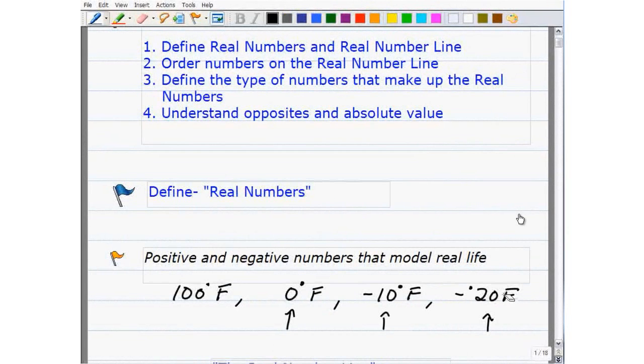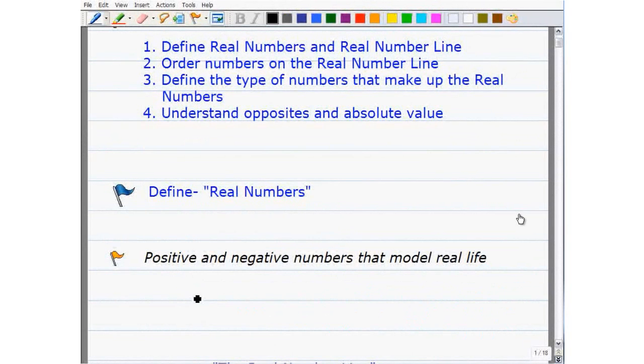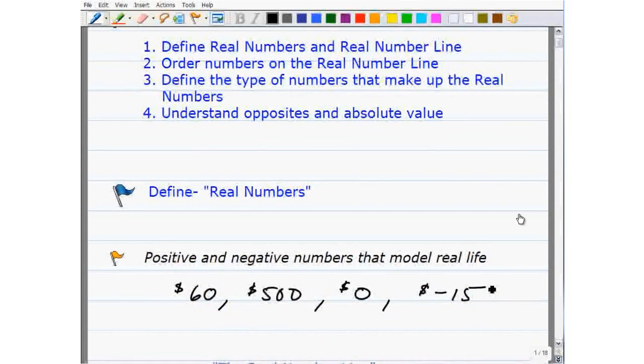I'll give you another example. Let's talk about money now. What if we had the following situations in our bank account over a period of time: $500, $60, $0, -$15. Which is the most in your bank account at any one period? Well, we would say $500 is the most, and you would be correct.